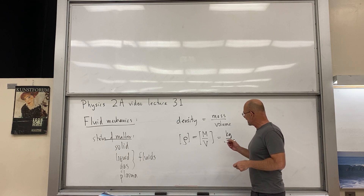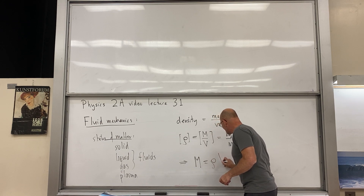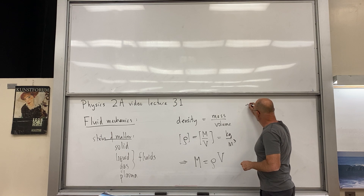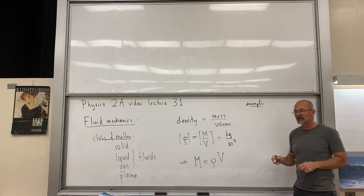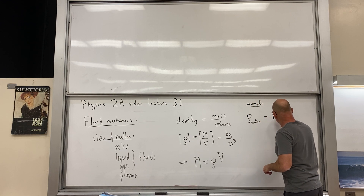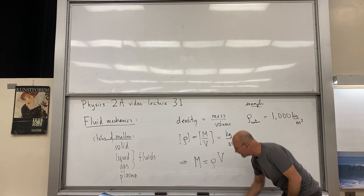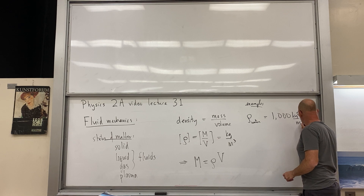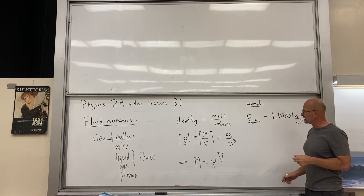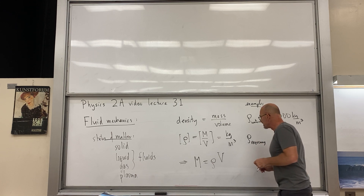A useful consequence is that mass equals density times volume, by rearranging. Let's look at some example densities. The most important one is the density of water, which is 1000 kilograms per cubic meter. Things less dense than this will float on water, and things more dense will sink.